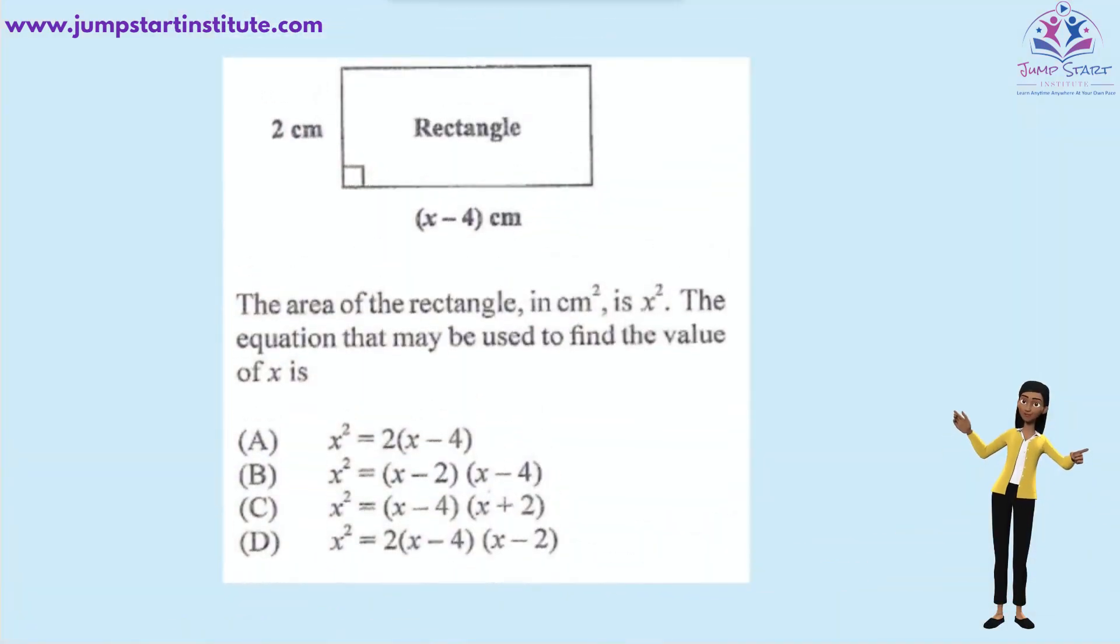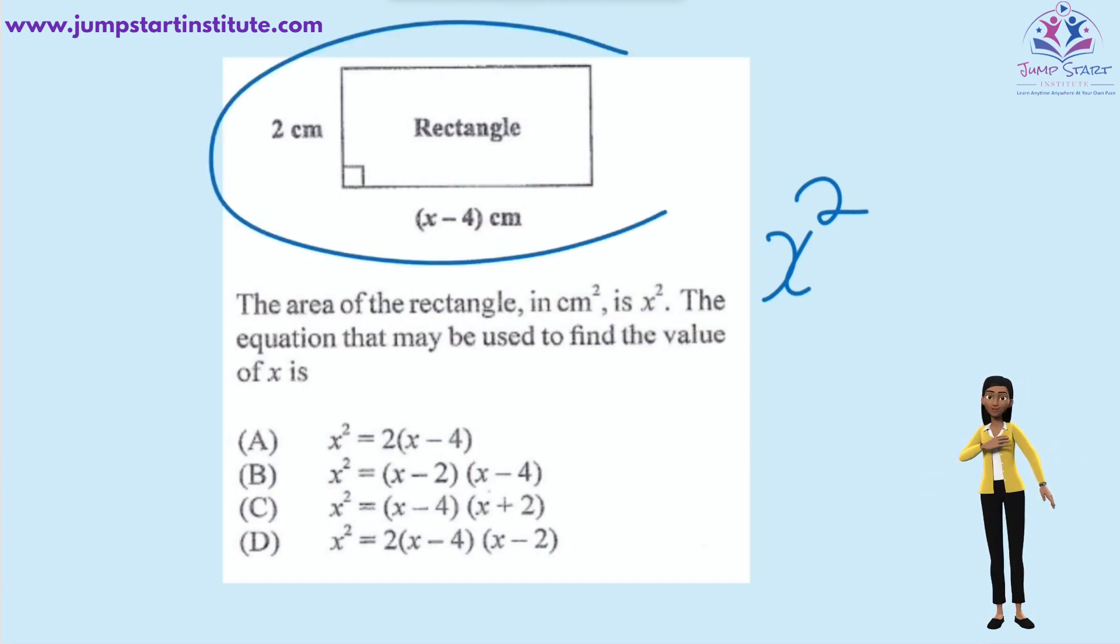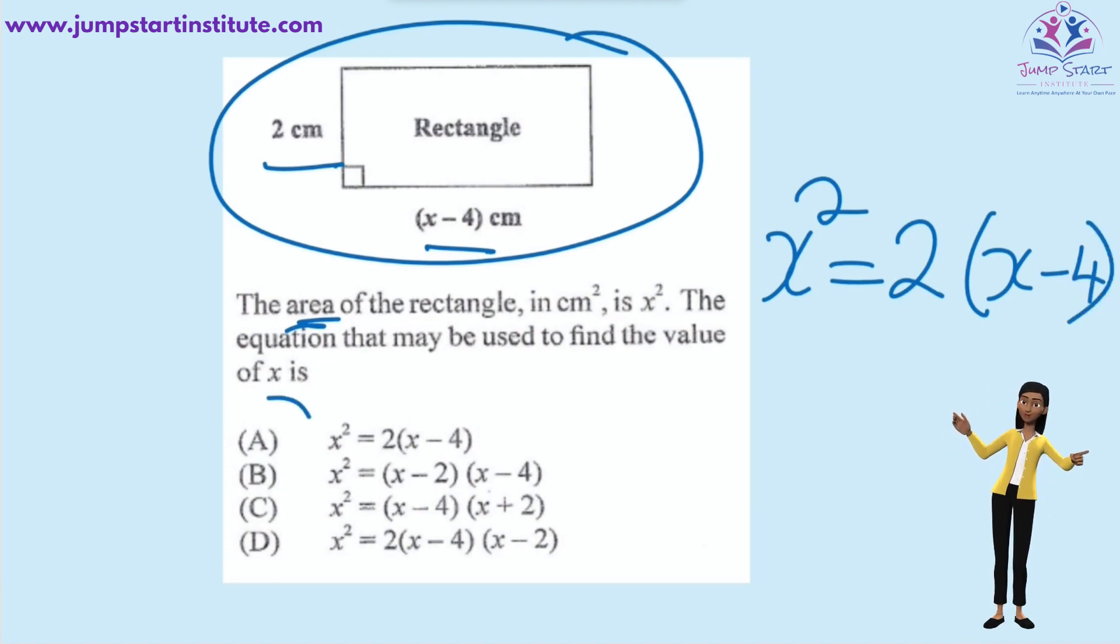The area of a rectangle in centimeters squared is x squared. The equation that may be used to find the value of x is, as you can see, the shape here is a rectangle. How do we determine the area of a rectangle? This is done by multiplying the length by the width. Therefore, the area would be 2, the width, multiplied by the length, x minus 4 centimeters. Therefore, the answer is A, x squared is equal to 2 multiplied by x minus 4.